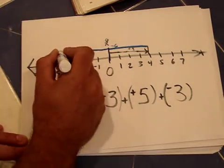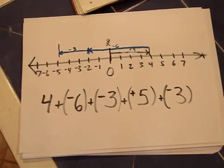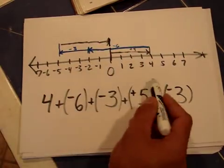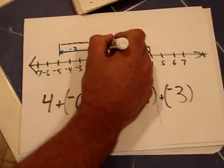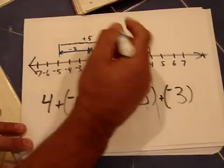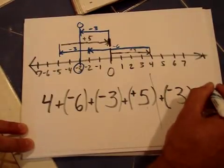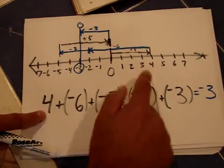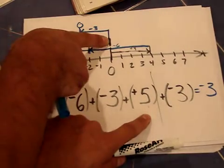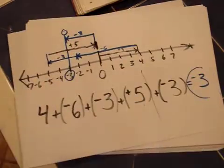From negative 5, I move up 5: 1, 2, 3, 4, 5 — back to 0. Then finally I move down 3 more. I end up at negative 3. To recap the moves: up 4, down 6, down 3 more, up 5, then down 3. My final position is negative 3.